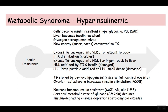As insulin resistance increases, the whole metabolic syndrome begins to manifest itself, and one of those manifestations is elevated blood sugar. So another point: if we wait until we start seeing blood sugar elevation, we're missing some of the early things that we could correct.